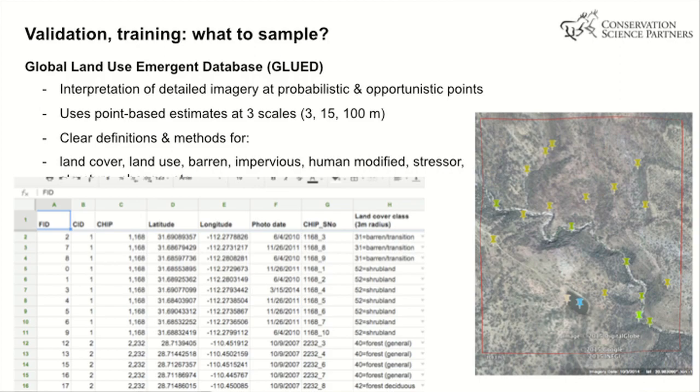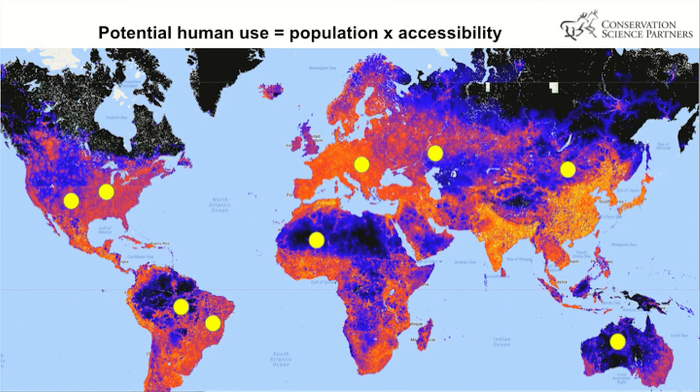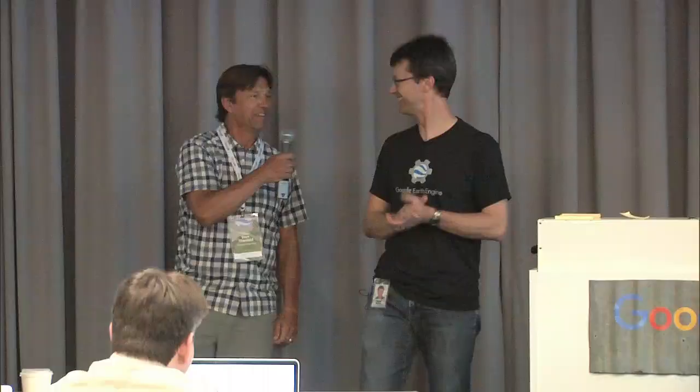We've also been making this information available to test and validate data sets, very similar to population accessibility. What have I learned so far? I've learned to speak more quickly. The integration of vectors and tables and bringing those in is extremely powerful — it's a game changer. Kudos to all of you, it's awesome.